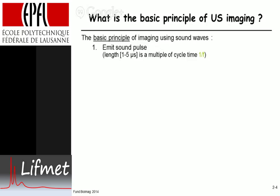The pulse needs a finite length that is sufficiently long to have a characterized frequency — some kind of multiple of the frequency. The exact multiple is not so important for understanding the principle. The ultrasound frequency for imaging is between 1 and 20 megahertz.